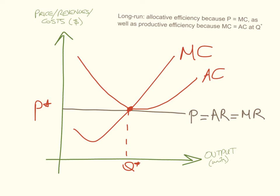When a firm is earning abnormal profit or making a loss, because of freedom of entry and exit, firms will either enter or leave the market until, in the long run, perfectly competitive firms achieve allocative efficiency — because price will equal marginal cost — as well as productive efficiency — because marginal cost will equal average cost at the profit-maximising level of output. Q* occurs when marginal revenue equals marginal cost, which also happens to be the point where marginal cost equals average cost. So perfectly competitive firms always achieve allocative efficiency in both the short and long run, and always achieve productive efficiency in the long run.